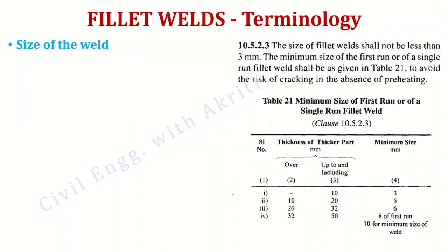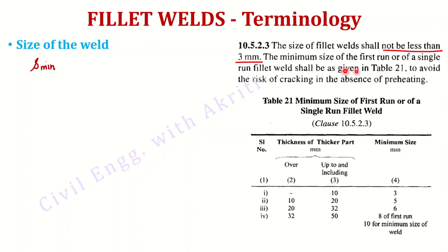Next, there is a defined minimum size for welds. Clause 10.5.2.3 says the size of the welds shall not be less than 3 mm — this is very important and commonly appears in MCQs. The minimum size of the first run or of a single run fillet weld shall be given as in Table 21.